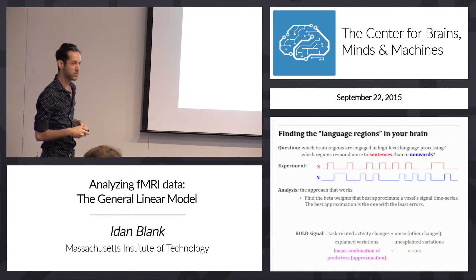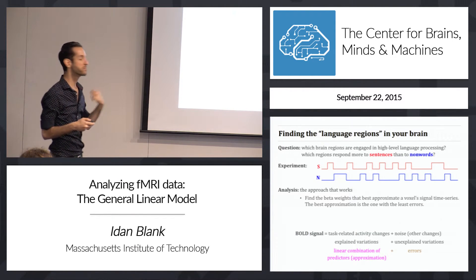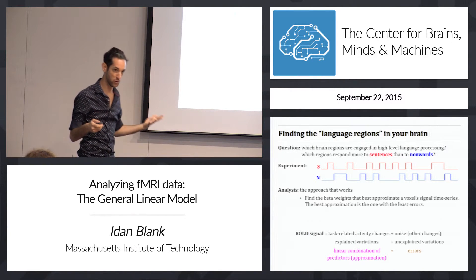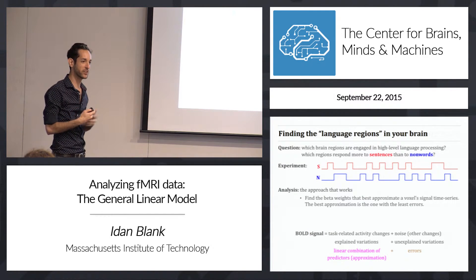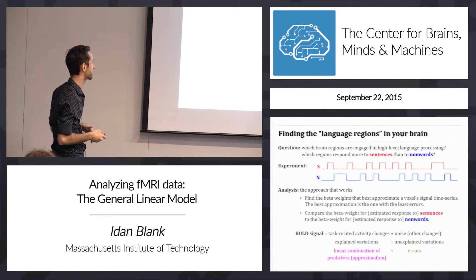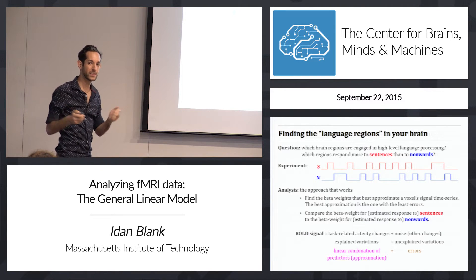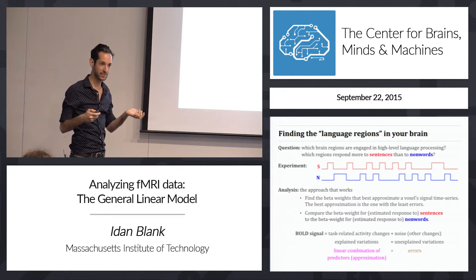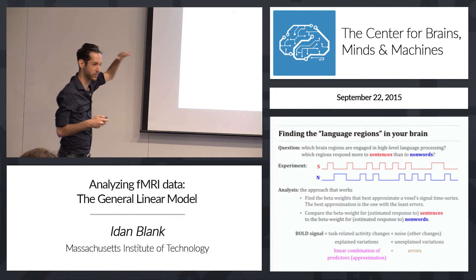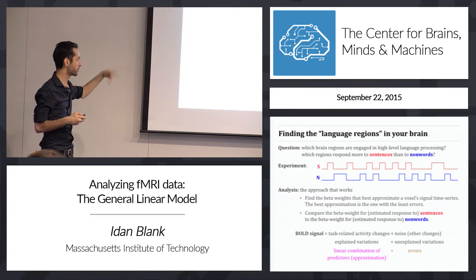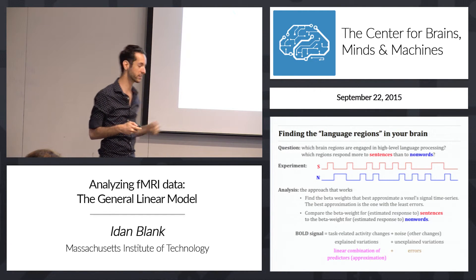The approach that works for analyzing fMRI data is to find the beta weights that best approximate a voxel's actual signal, where the best approximation is the one with the least errors — that is our criterion, where errors are minimal. Once we find the beta weights, we compare the beta for sentences, which tells us by how many units the signal increases when you read sentences, to the beta for non-words, which tells us by how many units the signal increases when you read non-words.